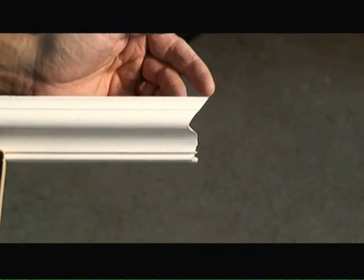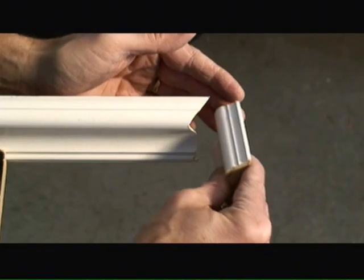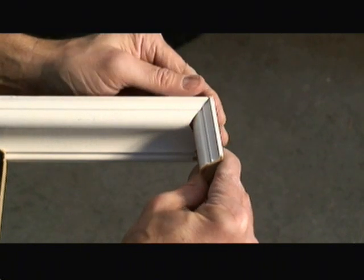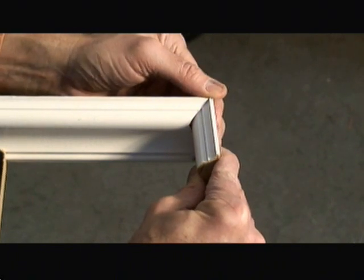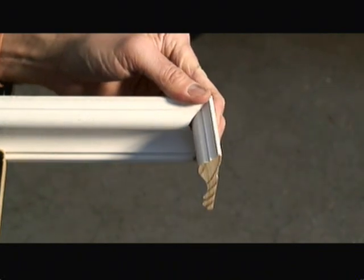So once we've made the coped cut and cleaned it up with a little sandpaper, we can now take the adjacent piece of chair rail and form the nice, tight 90-degree corner.